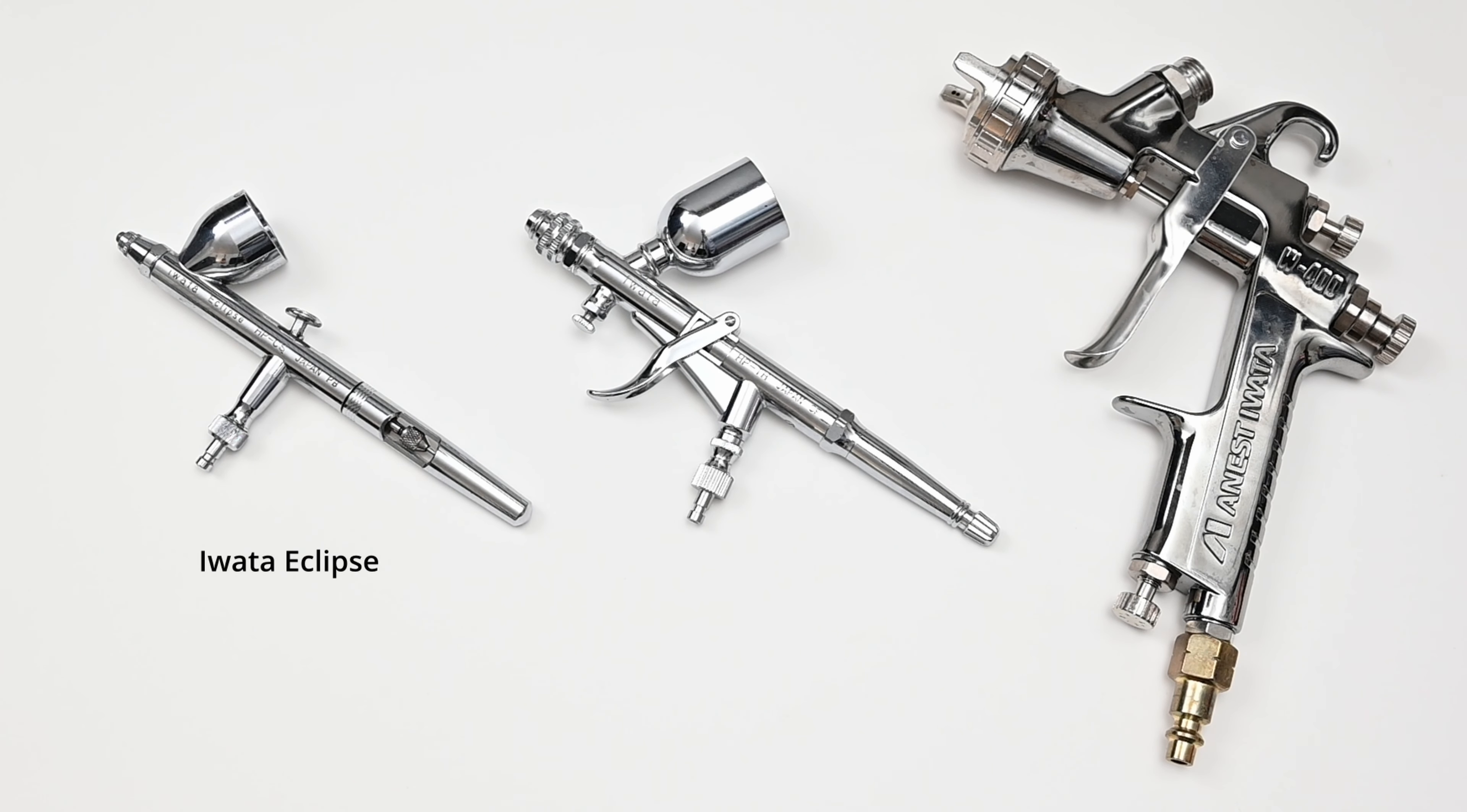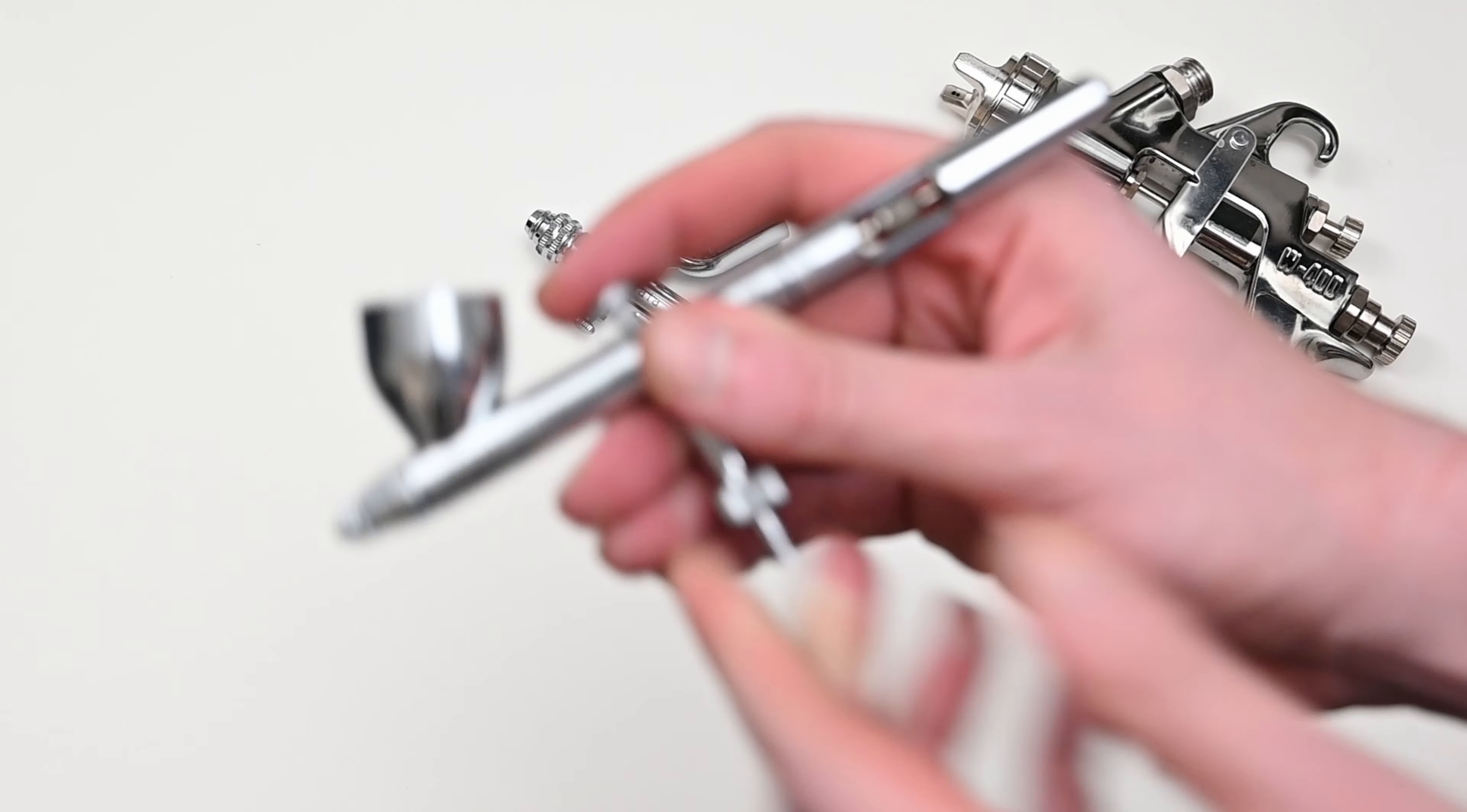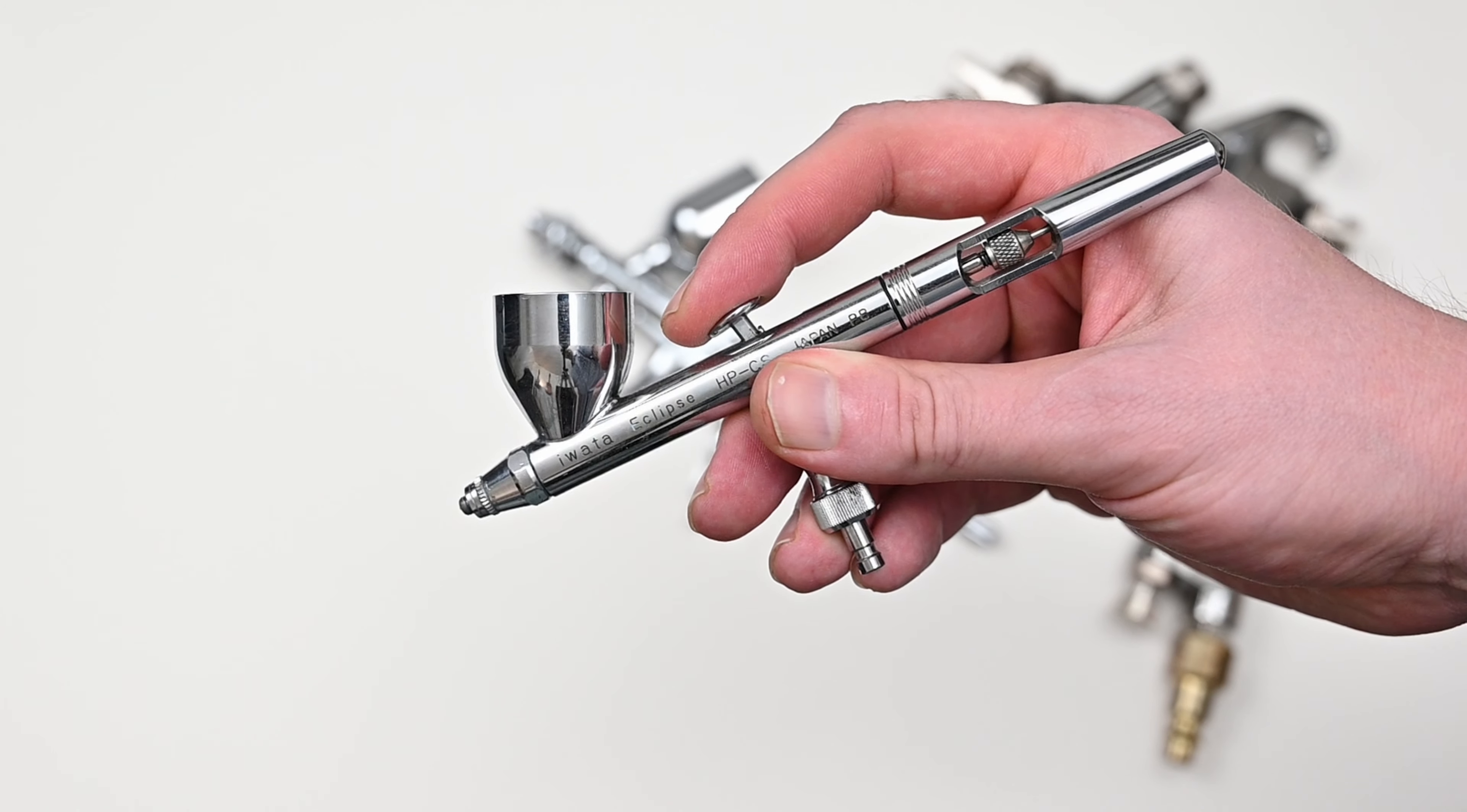So this Iwata HPTH is kind of like a bridge between a traditional airbrush like the Iwata Eclipse to a larger spray gun like an HVLP or this LVLP. This Iwata Eclipse is perfect for general use airbrushing.